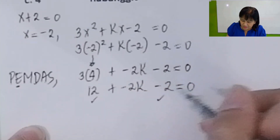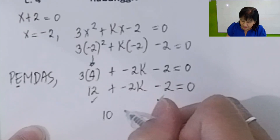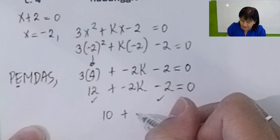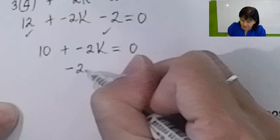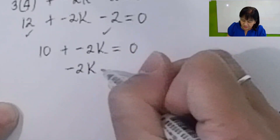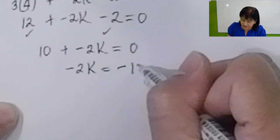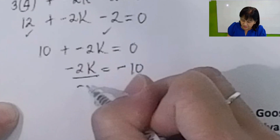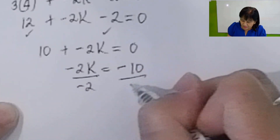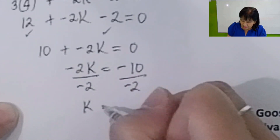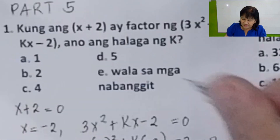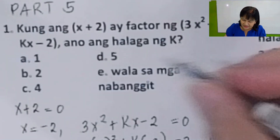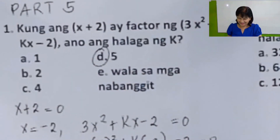3 times 4 is 12 plus negative 2k minus 2 equals 0. 12 plus negative 2 gives you 10 plus negative 2k equals 0. We're solving for k, so you have to transpose 10 to the other side. That's negative 10 over negative 2. So k is equal to positive 5. The answer is letter D — k is 5.